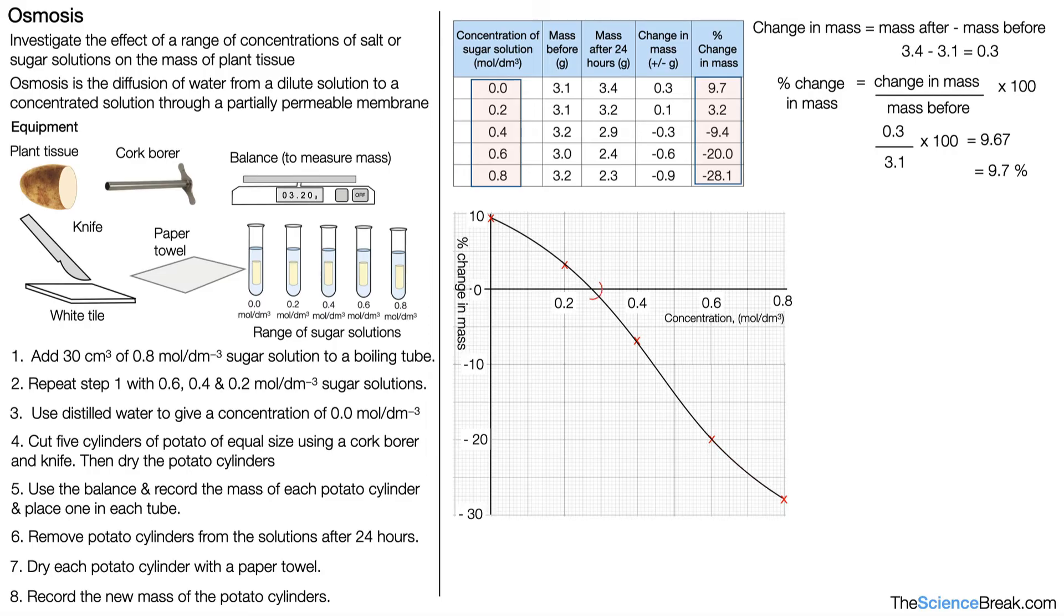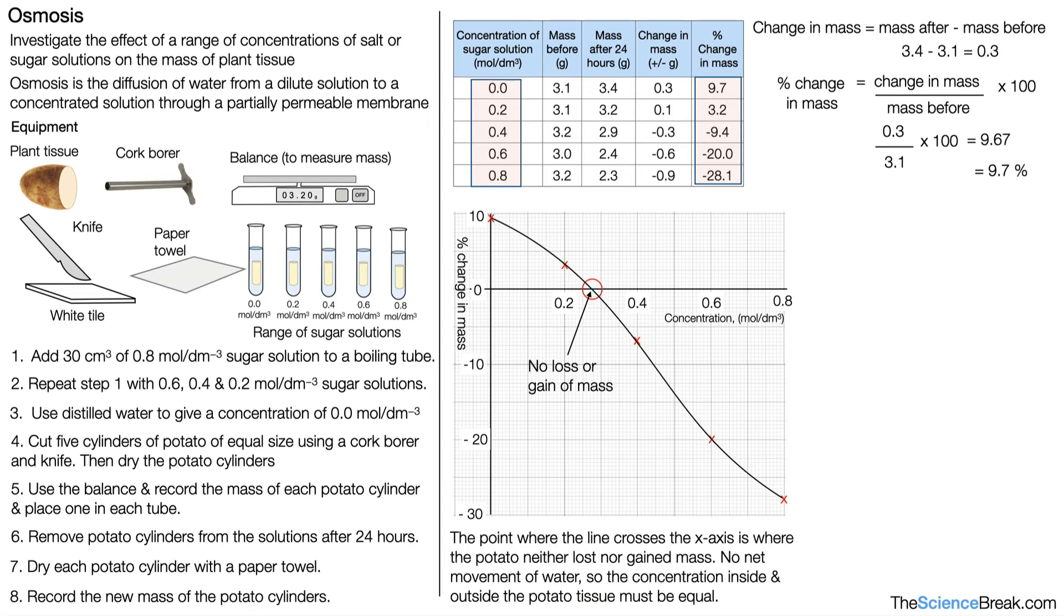What's very important here is this point where the line crosses the x-axis. This is where there is no loss or no gain of mass—the percentage change in mass is zero. The point where the line crosses the x-axis is where the potato neither lost nor gained mass. That means there is no net movement of water, so the concentration inside and outside the potato tissue must be equal. This tells us the concentration inside the potato tissue.